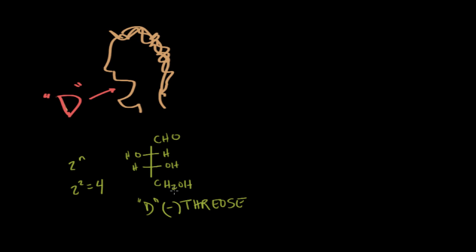So even though this is D, it actually gets a negative sign for its optical activity — this is D-minus-threose. It's D because this lowest chiral center has R stereochemistry. Now, the second big thing to clarify is that the D and L configurations of a particular carbohydrate are enantiomers, which means they differ at every chiral carbon, not just the last one.